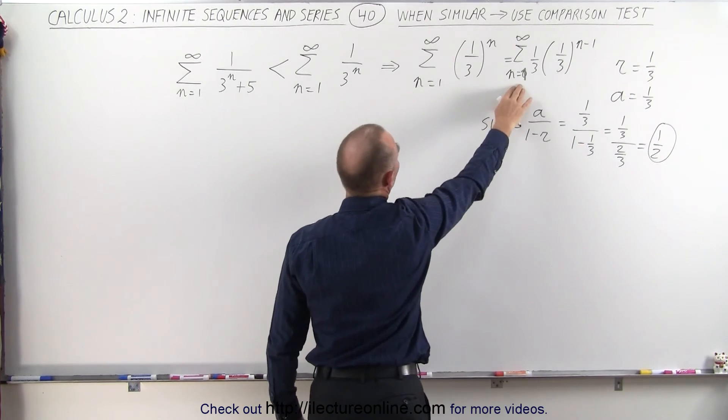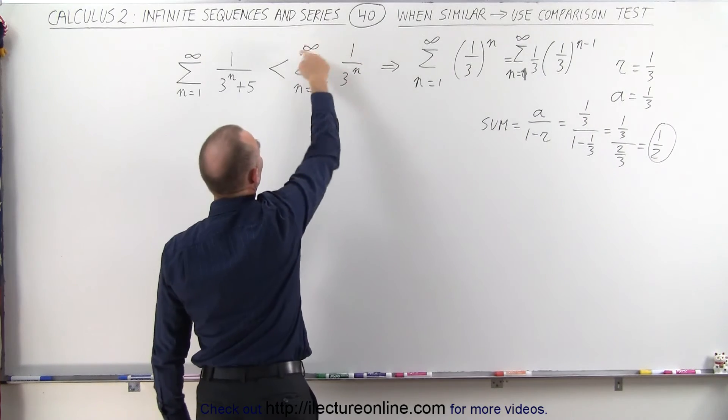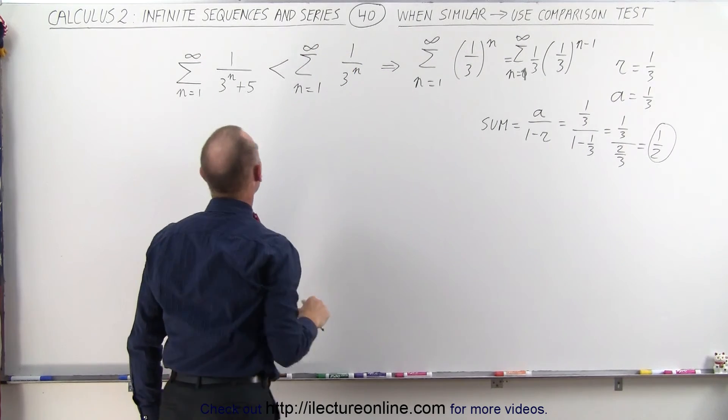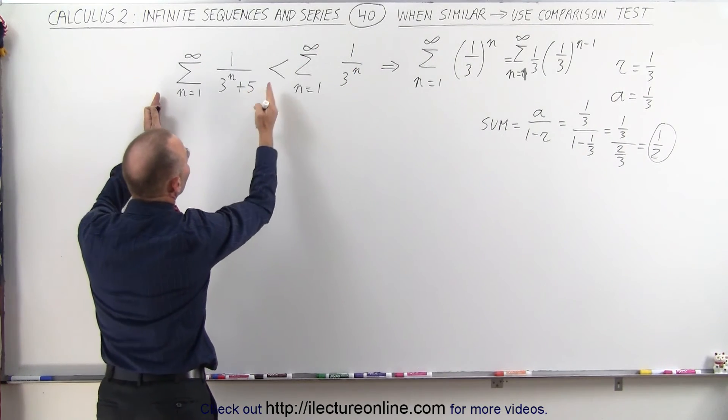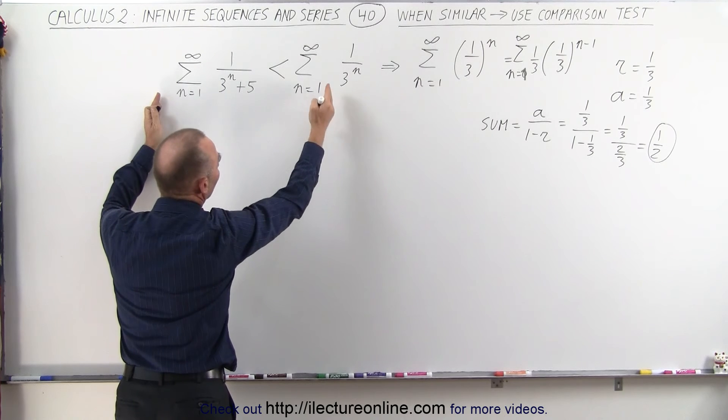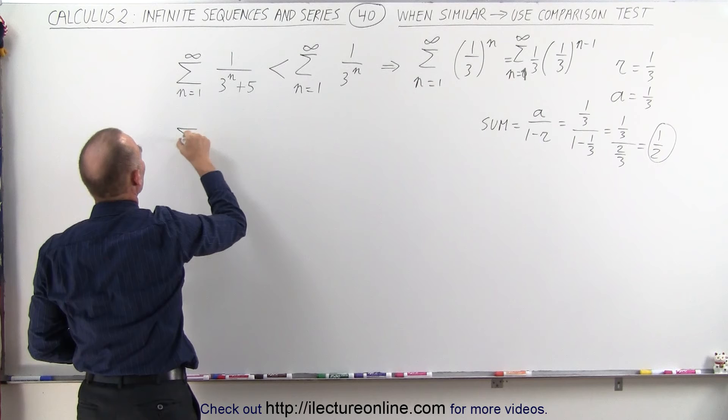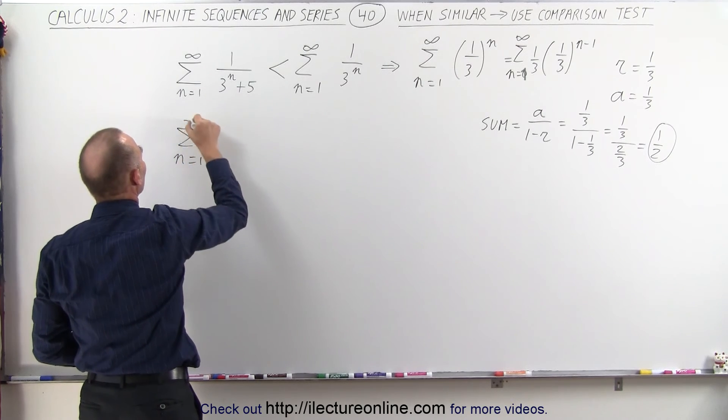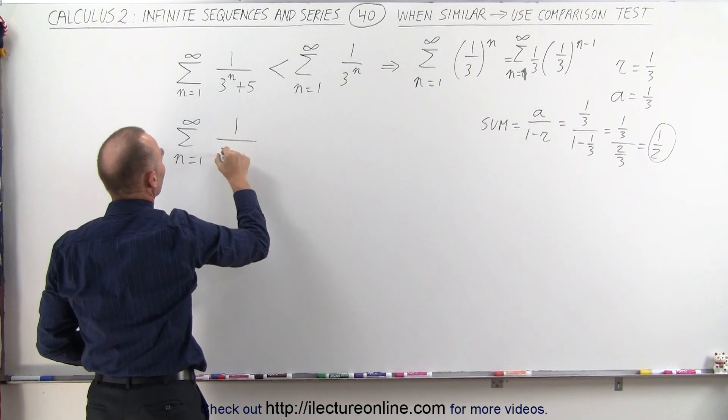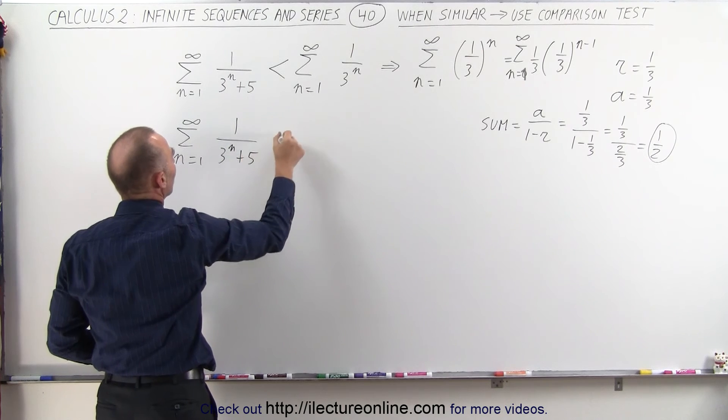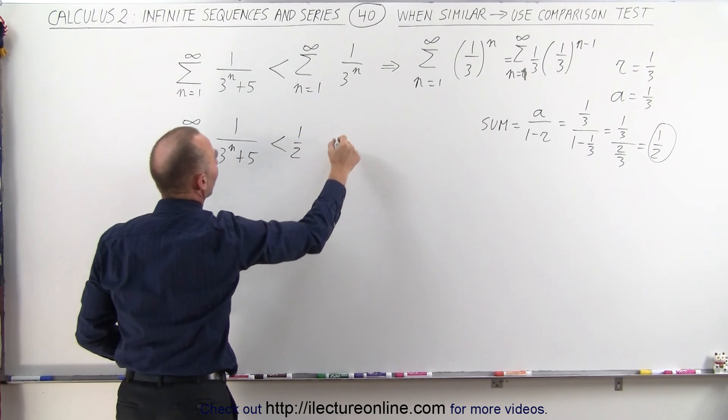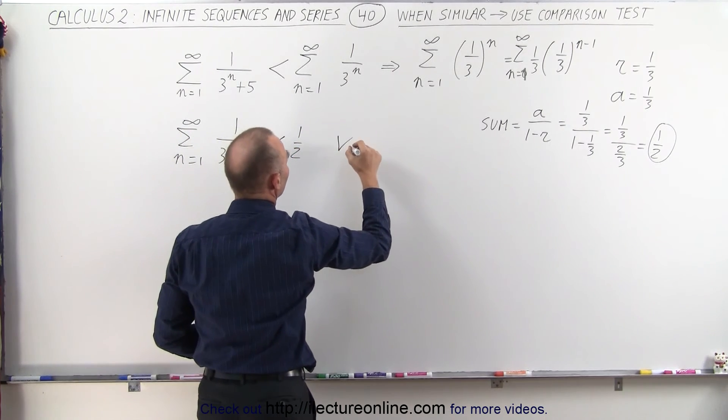So we know that this series converges to 1 half, which means this converges to 1 half. And since we know that the left side is less than the series here, and since this is equal to 1 half, the sum of n equals 1 to infinity of 1 divided by 3 to the n plus 5 must be less than 1 half. So therefore, we know that it converges.